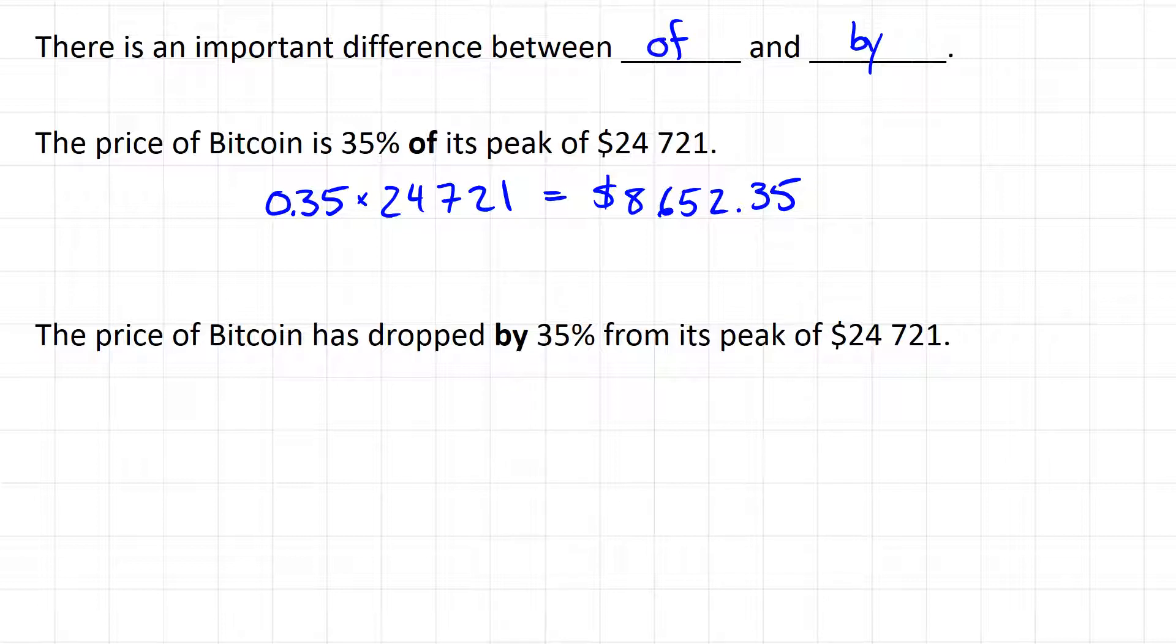Now if we hear that the price of Bitcoin has dropped by 35% from its peak, what that means is that it's 35% down from what it was. In other words, if it was $24,721, it's now dropped by $8,652.35. So it's dropped by 35% of its value. That means its total value is $16,068.65.